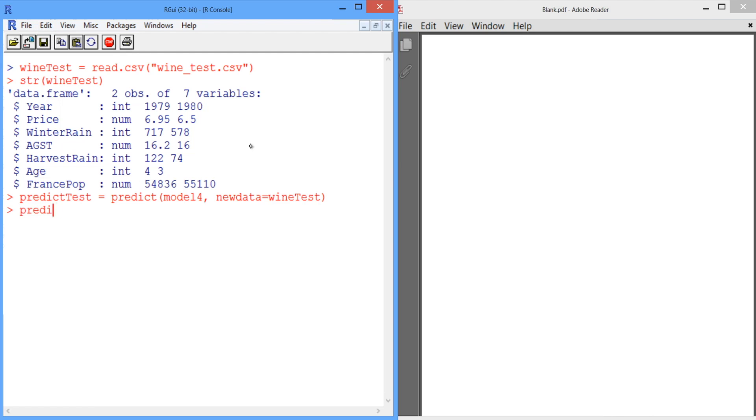If we look at the values in predictTest, we can see that for the first data point, we predict 6.768925, and for the second data point, we predict 6.684910. If we look at our structure output, we can see that the actual price for the first data point is 6.95, and the actual price for the second data point is 6.5.